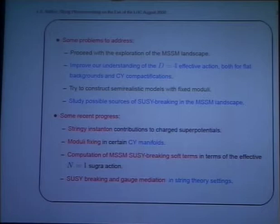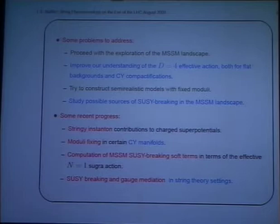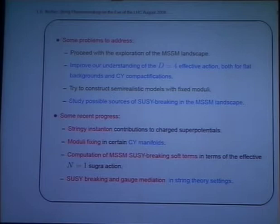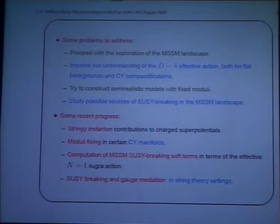What is clear is that gauge coupling unification is not generic in orientifolds. In these 200,000 models, the values of the coupling constants span a large area. The value preferred by SU(5) gauge coupling unification is certainly not particularly preferred. You can choose models in which you are close to the SU(5) point, but it is not something which comes naturally. There is a lot of things to be done: we have to improve our understanding of the four-dimensional effective action for generic Calabi-Yau compactifications, and combine this class of semi-realistic models with moduli stabilization and study possible supersymmetry breaking.